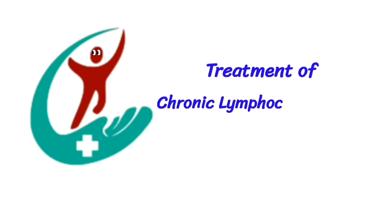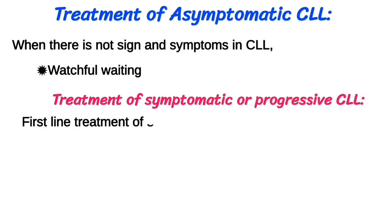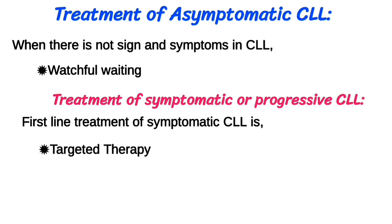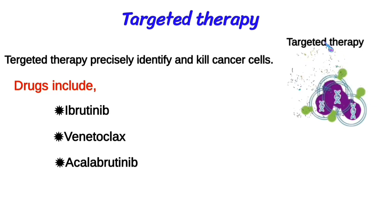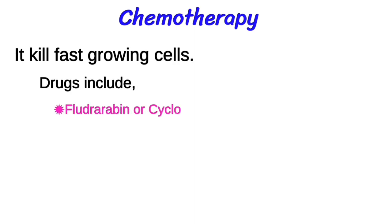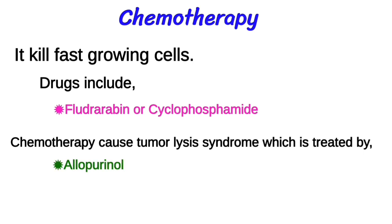Treatment of chronic lymphocytic leukemia: when there are no signs and symptoms, watchful waiting is used. For symptomatic or progressive CLL, first-line therapy includes targeted therapy and chemotherapy. Targeted therapy identifies and kills cancer cells; drugs include ibrutinib, venetoclax, and acalabrutinib. Chemotherapy kills fast-growing cells; drugs include fludarabine or cyclophosphamide. Chemotherapy can cause tumor lysis syndrome, which is treated by allopurinol and rasburicase.